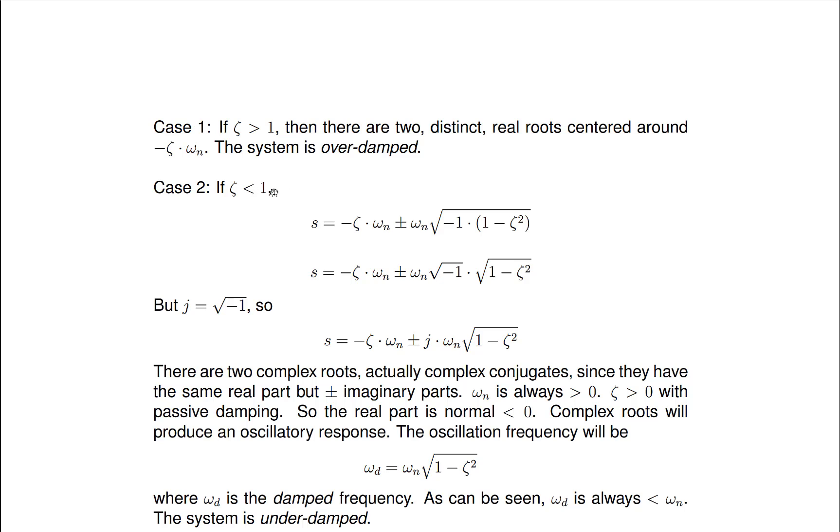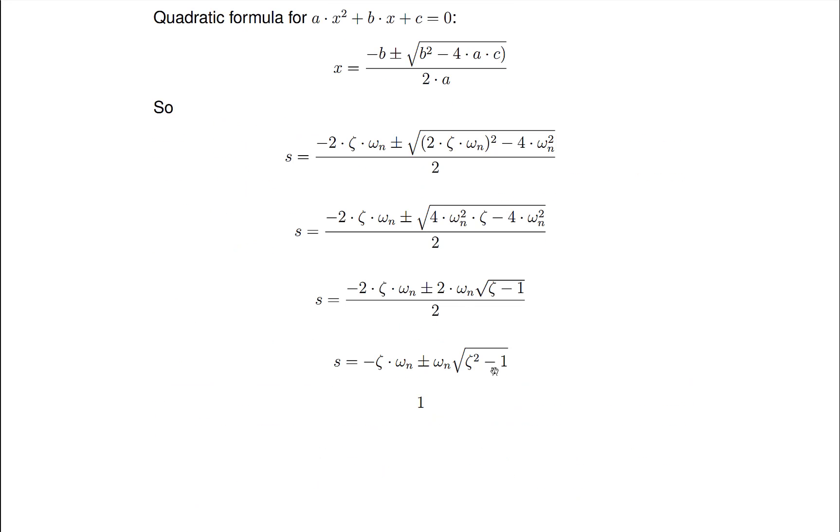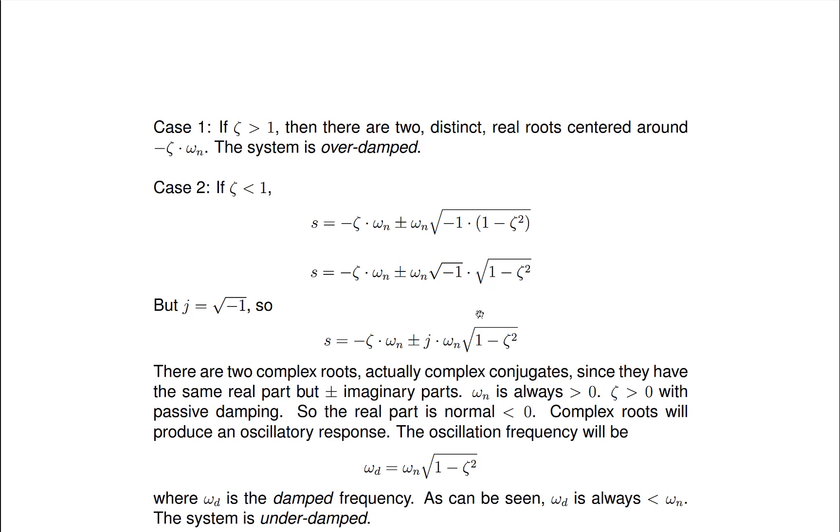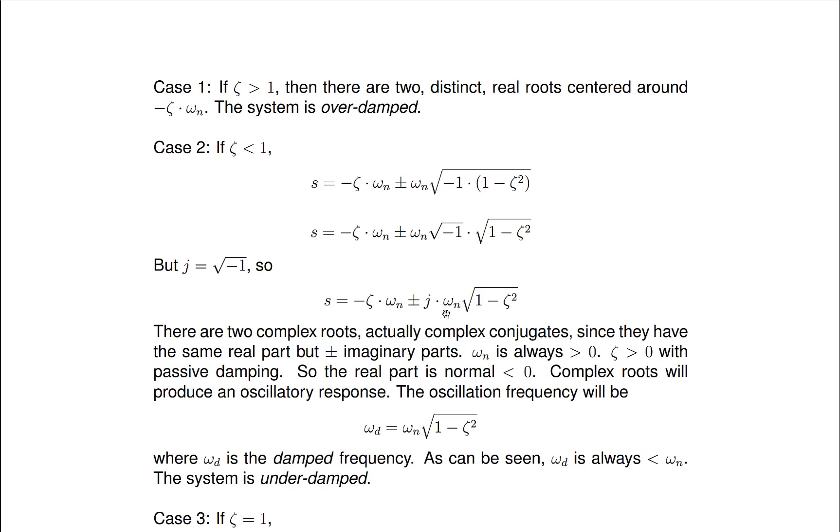Now if zeta is less than 1 then what we can do is we can factor out a negative 1 out of here which switches the order of that. And that's what I've done right here. And so we break that up into two radicals and recall that the square root of negative 1 is i or j. We traditionally use j in controls.